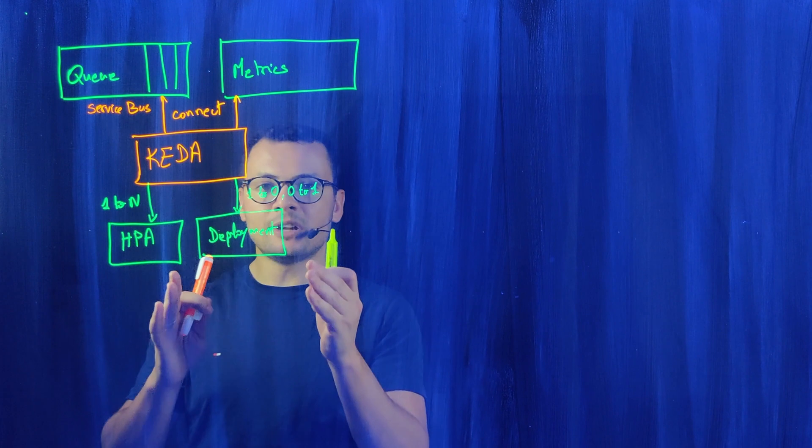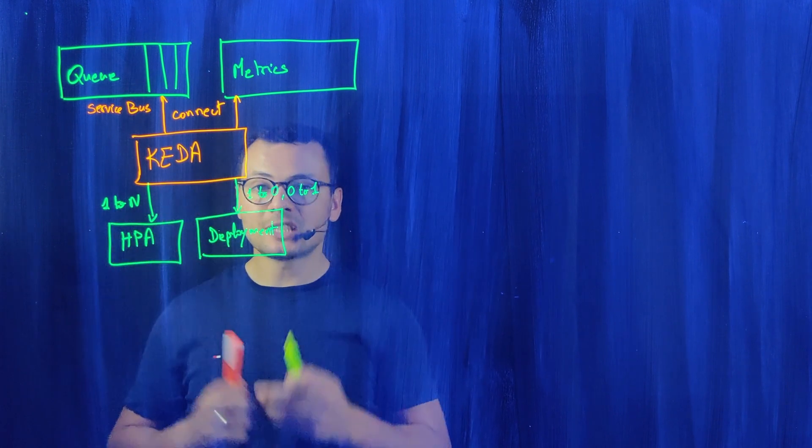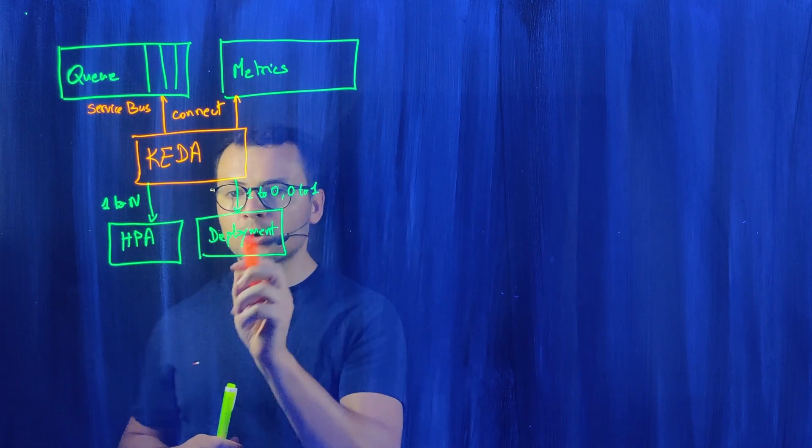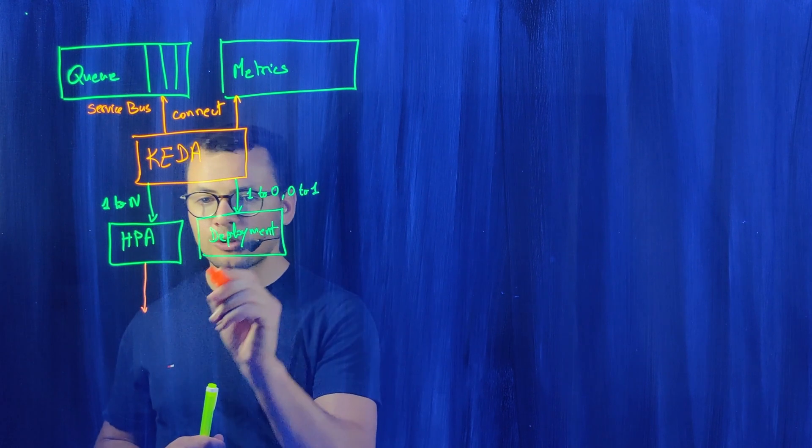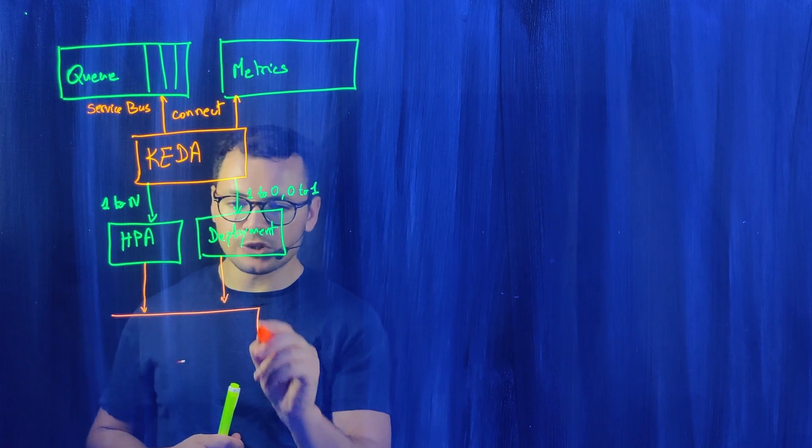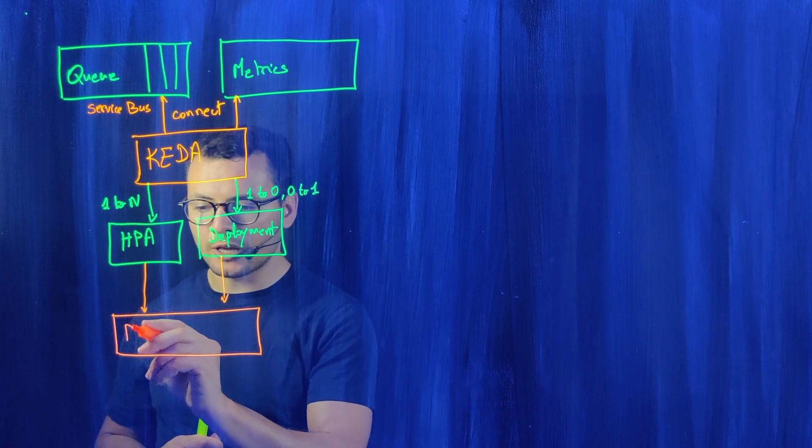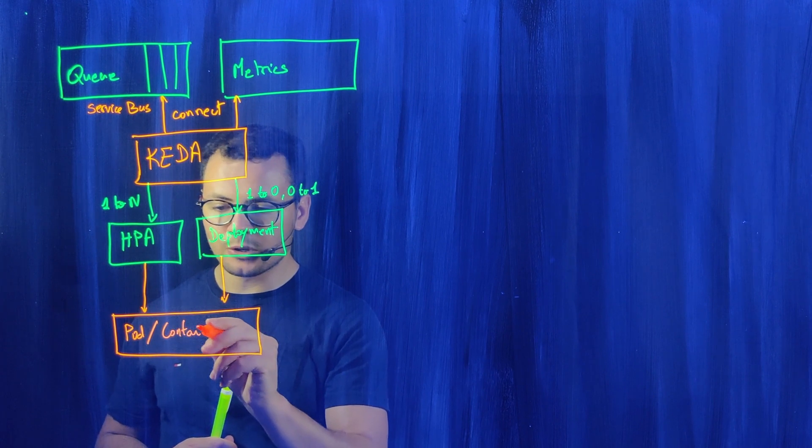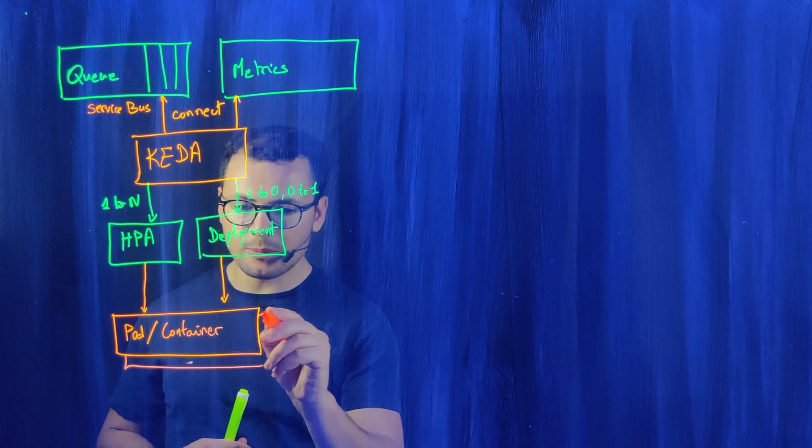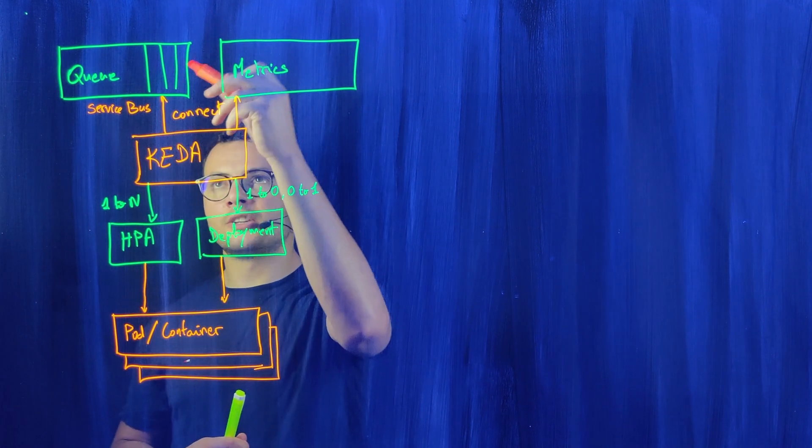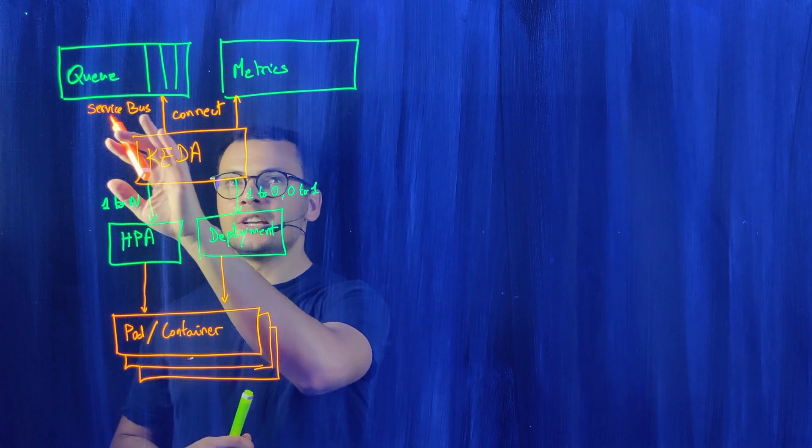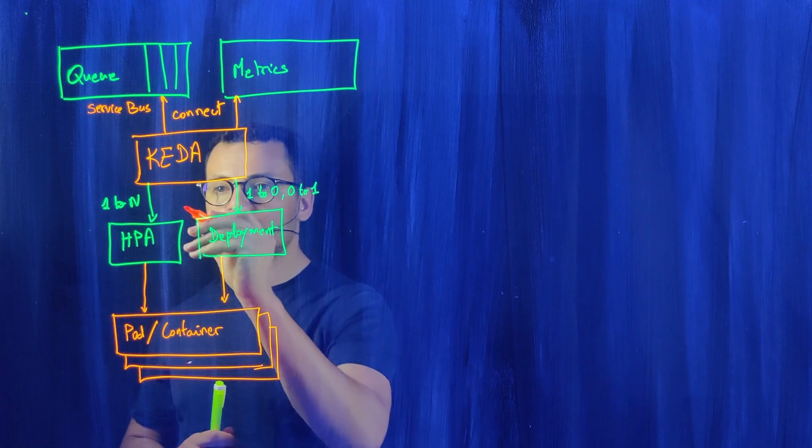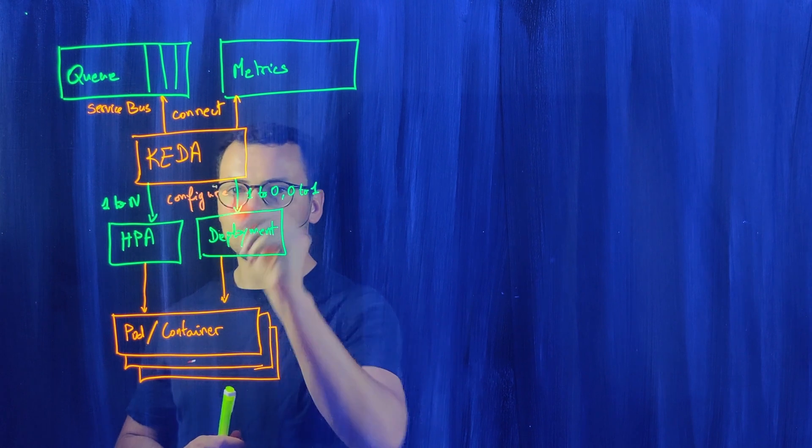This will enable me to have not just one to n containers. I can have zero to n containers running in my Kubernetes cluster. If I configure these two components, then they will change the number of replicas of my pods or deployments or container apps. KEDA will connect to the external system to get the data or metrics and then use it to scale my containers, configuring the scaling rules.